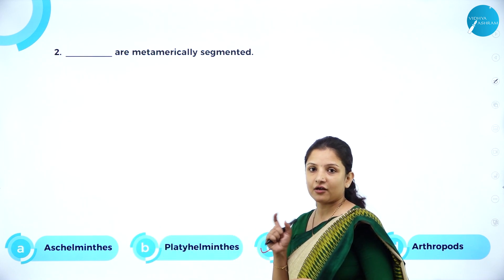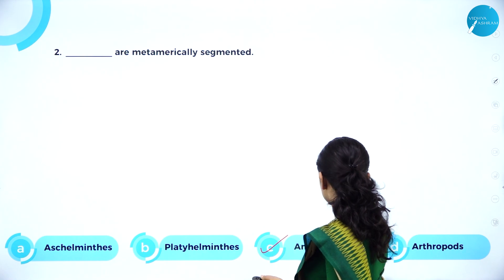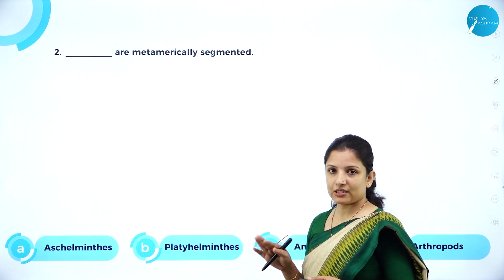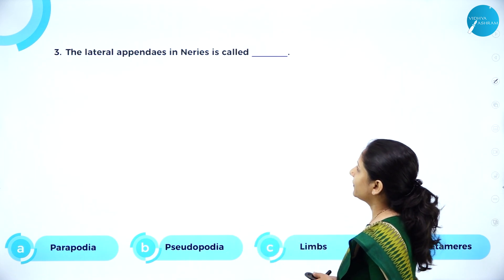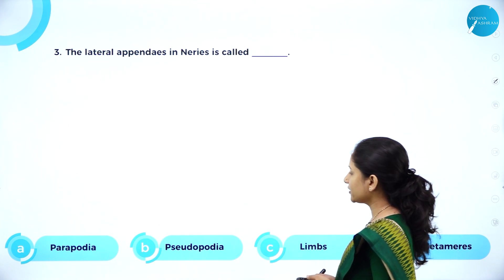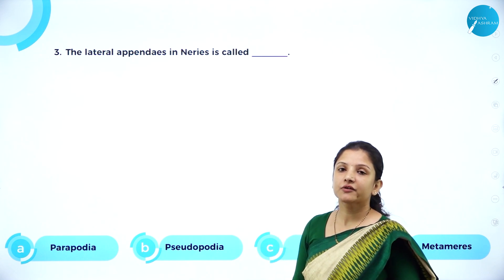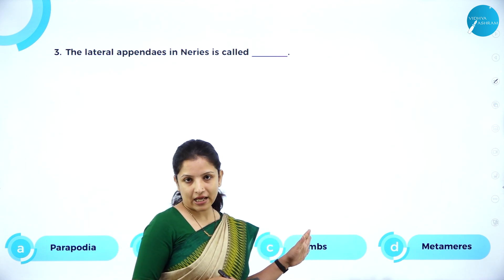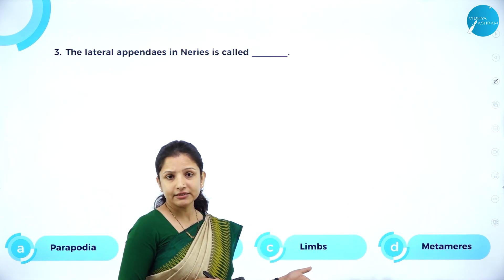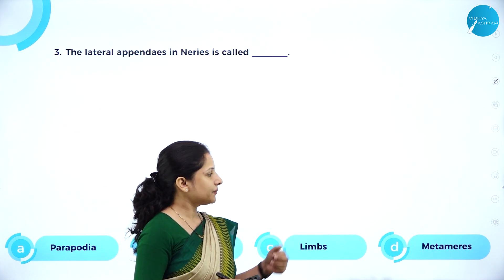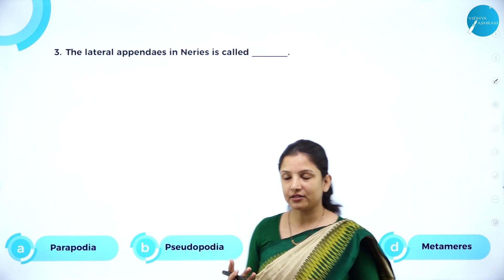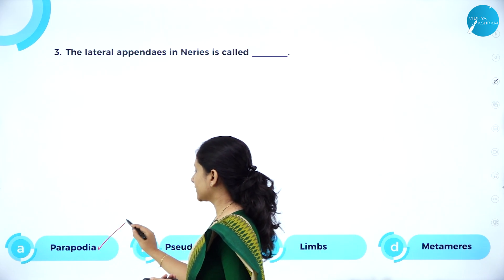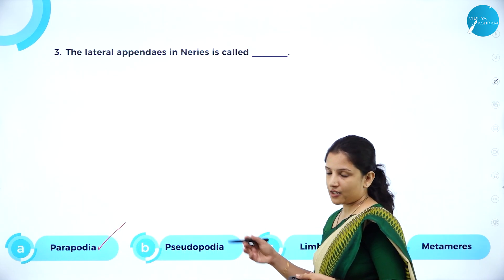Be very careful — arthropods are segmented, but they are not metamerically segmented. Third MCQ: the lateral appendages in Nereis are called — parapodia, pseudopodia, limbs, or metamere? Pseudopodia are false feet present in Amoeba, so not pseudopodia. Limbs come under vertebrates. Metamere refers to segmentation, not appendages for movement. So the answer is parapodia — Nereis has parapodia.